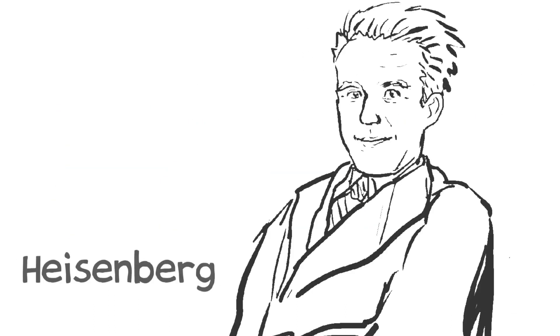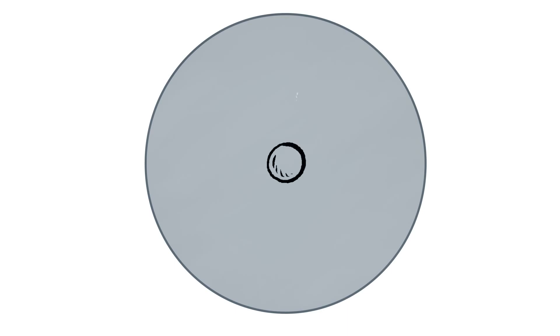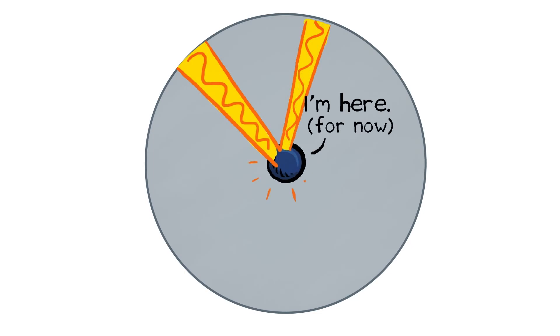It's called the Heisenberg microscope. If you imagine you had a little particle and you wanted to look at it, you could know its position perfectly well at one instant in time. But then you wouldn't know where its position was after that. Even light that you used to observe it would still disturb it, would transfer momentum to the object and kick it.